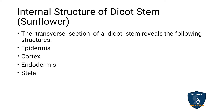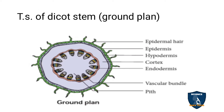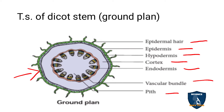The internal structure of dicot stem — the example given here is a sunflower stem. When you take a cross section of the sunflower stem and view it under the microscope, you can see the following structures: epidermis, cortex, endodermis, and stele. This is the ground plan of the dicot stem in cross section or transverse section, showing epidermis, hypodermis, cortex, endodermis, and vascular bundles.